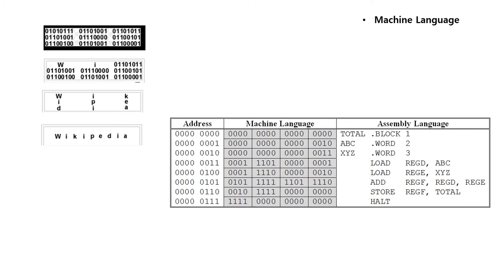Machine language is the lowest level programming language, except for computers that utilize programmable microcode. Machine languages are the only languages understood by computers. While easily understood by computers, machine languages are almost impossible for humans to use because they consist entirely of numbers. Assembly language contains the same instructions as machine language, but the instructions and variables have names instead of being just numbers. Assembly language programs are translated into machine language by a program called an assembler. Every CPU or central processing unit of the computer has its own unique machine language. Programs must be written or recompiled to run on different types of computers.